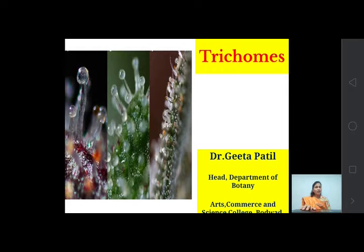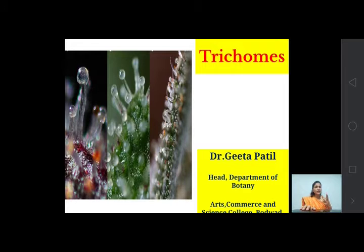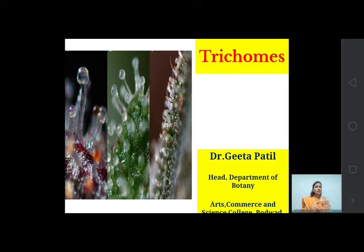In the epidermal tissue system, along with the epidermis and cuticle, there are four types of structures present. First is epidermis, second is cuticle, third is trichome — which we are going to study in this lecture — and the fourth is stomata. In this lecture, we will study the details about trichomes.